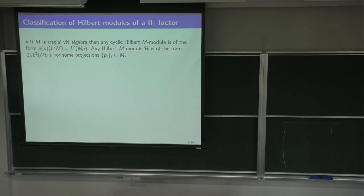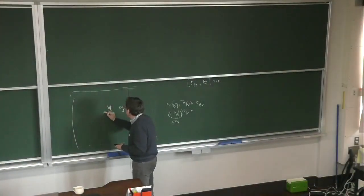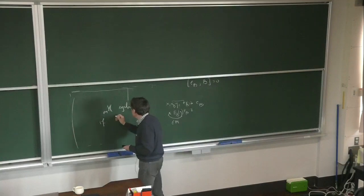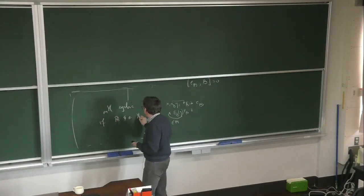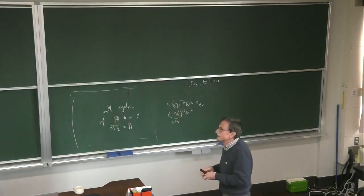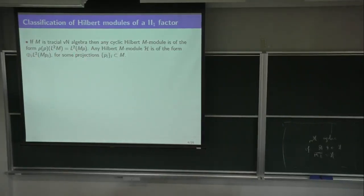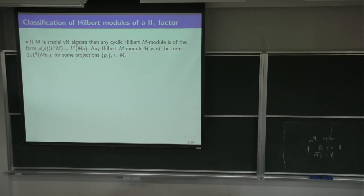Cyclic means MxΩ = H — you have a vector that generates the whole space. This is very easy to prove; it's an exercise. By a maximality argument, any Hilbert M-module will therefore be of this form — a direct sum over some family of projections. You can exhaust it with cyclic modules for some family of projections.